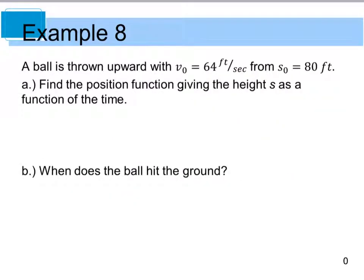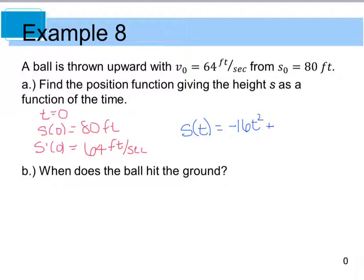And now it's time for our story problem. It says the ball is thrown upward with an initial velocity of 64 feet per second from an initial height of 80 feet. We want to find the position function given the height s as a function of time. So using this information, we know that when t equals 0, s of 0 is equal to 80 feet, and s prime of 0, because that's the derivative of velocity, is really equal to 64 feet per second. And you are expected to know that the displacement function, or s of t, is equal to negative 16t squared plus your v sub 0 t, which in this case is 64t, plus your initial height, which was 80.